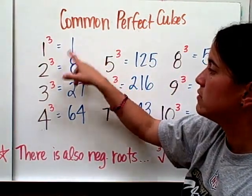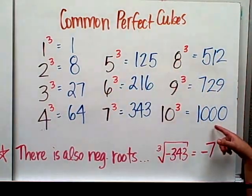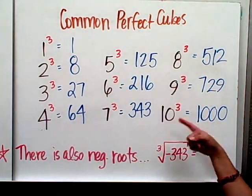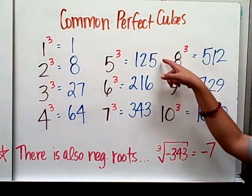Starting with 1 cubed is 1, 2, 3, 4, 5, 6, 7, 8, 9, 10 cubed is 1,000, because this means 10 times 10 times 10 is 1,000. So these are the numbers that you'll be using most of the time.